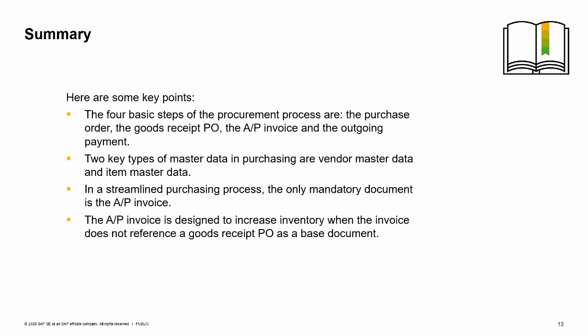In a streamlined purchasing process, the only mandatory document is the AP invoice. The AP invoice is designed to increase inventory when the invoice does not reference a goods receipt PO as a base document.